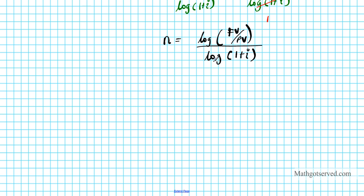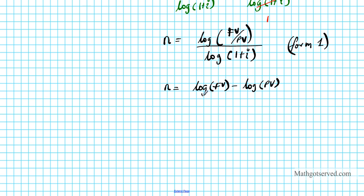You can also apply the quotient property of logarithms to expand this further. Another form — form 2 — is: N equals log(FV) minus log(PV), divided by the common log of 1 plus i. These two formulas are exactly the same, so it doesn't matter which one you use.